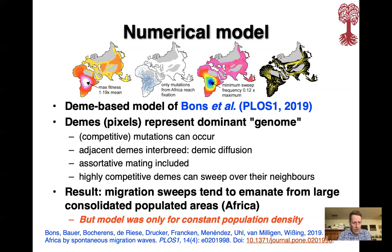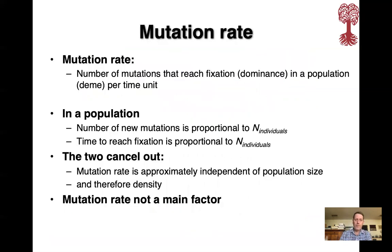In the published paper, the result was that migration sweeps tend to emanate from large consolidated populated areas, like Africa was. But in that model, we only used constant population density. So what would be the effect of differences in population density? First we look at mutation rate, defined as the number of mutations that reach fixation — or at least dominance — in a population, i.e. DEAMs per time unit.